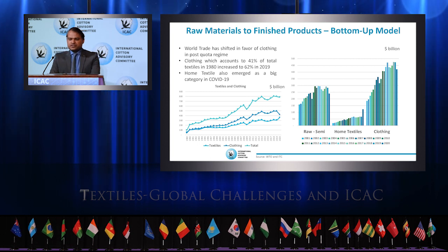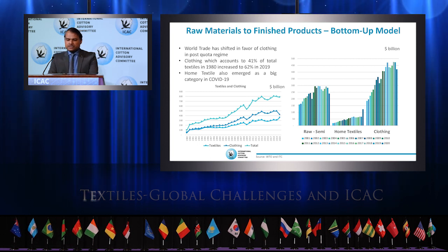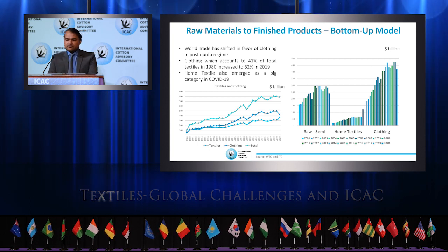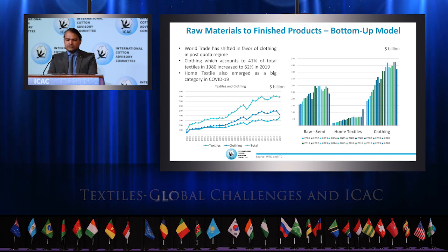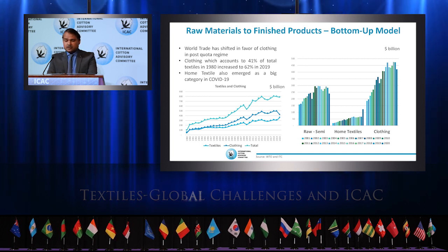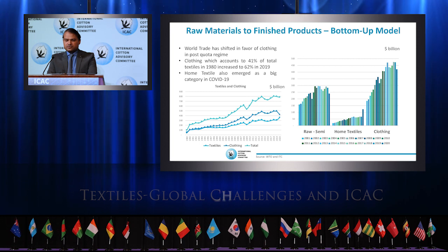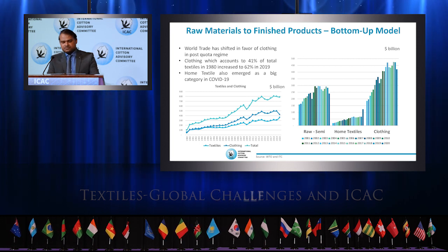Therefore, trade shifted in favor of clothing, which accounted for 41% of total textiles in 1980, increasing to 62% in 2019. The downstream model can still be a successful approach for countries entering into textiles.